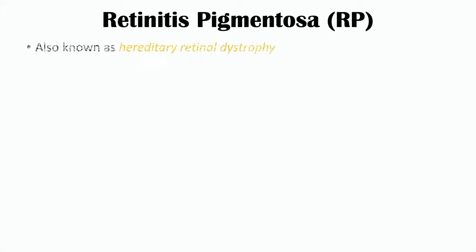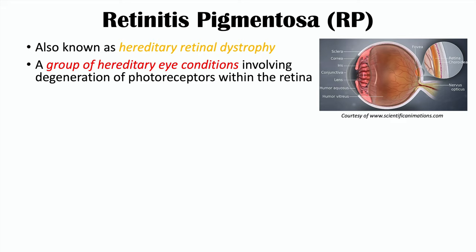Retinitis pigmentosa is also known as hereditary retinal dystrophy. It is actually not just one condition, but a group of hereditary eye conditions involving degeneration of photoreceptors within the retina. The photoreceptors are going to be the rods and the cones.